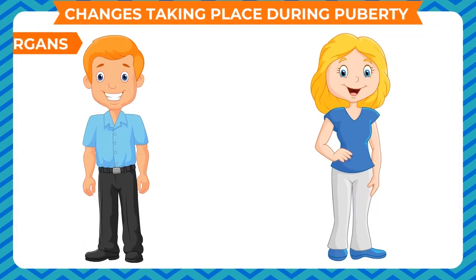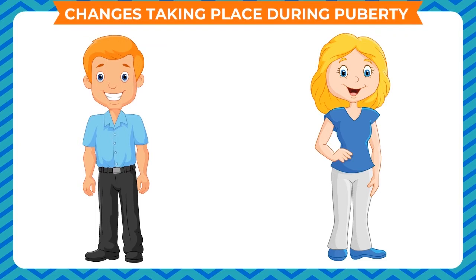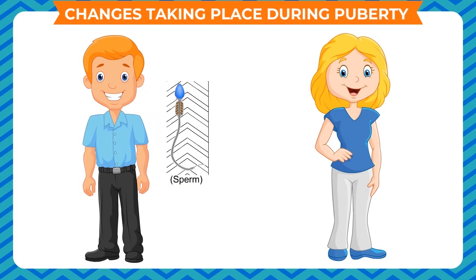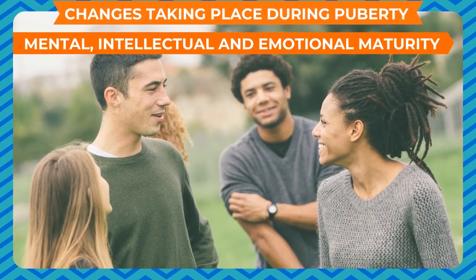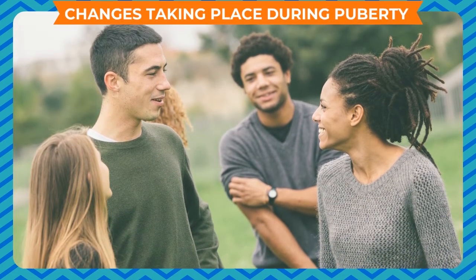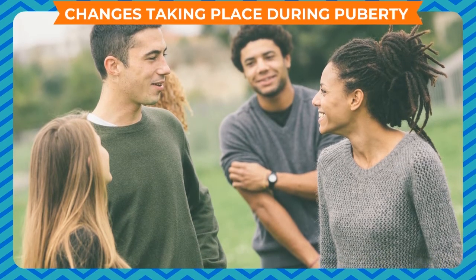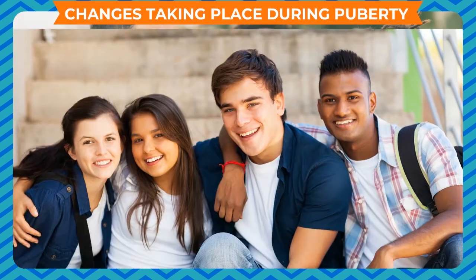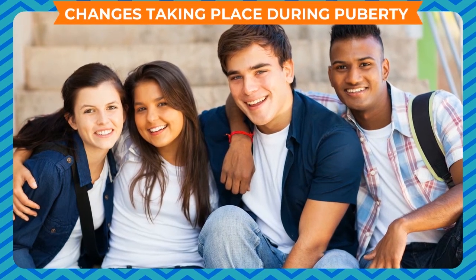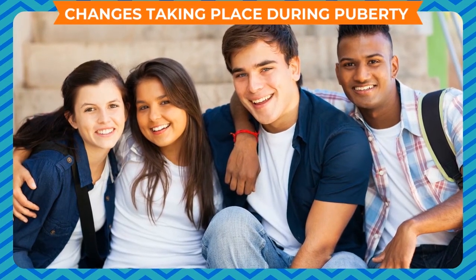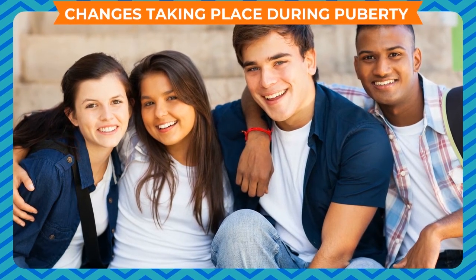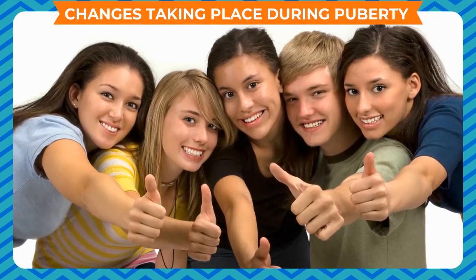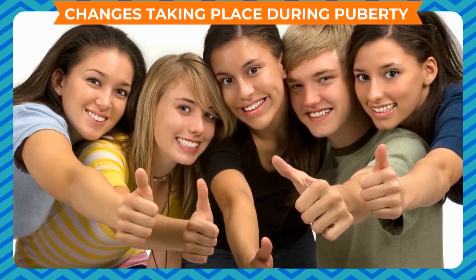Sex organs in both boys and girls develop completely during this period. Boys start producing sperms while girls start producing ovum. Adolescents reach the stage when they are mentally mature. They spend a lot of time thinking; the brain is quite active. At times, adolescents find it difficult to adjust to the changes taking place. However, they should realize that these are natural changes.